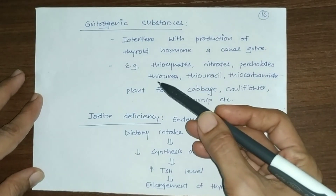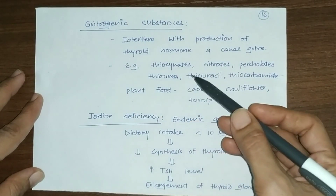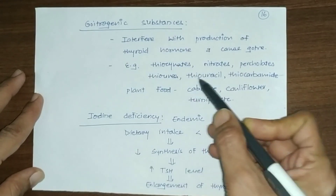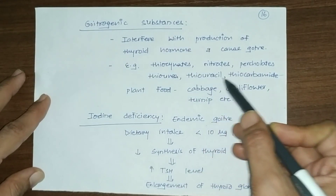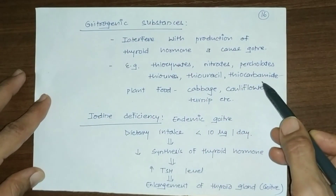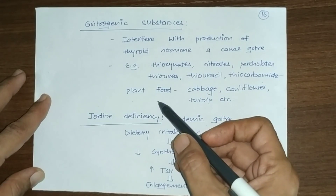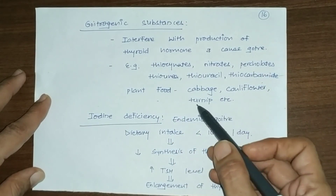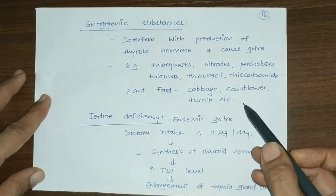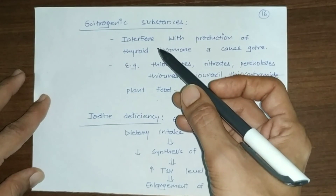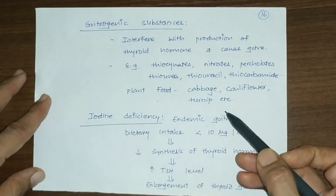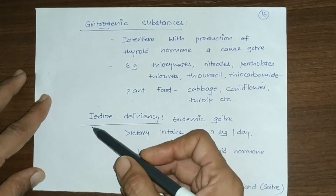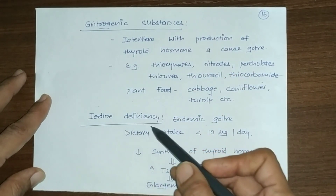Goitrogenic substances include thiocyanates, nitrates, perchlorates, thiourea, thiouracil, thiocarbamide, and certain plant foods such as cabbage, cauliflower, and turnips, which also contain goitrogenic substances.